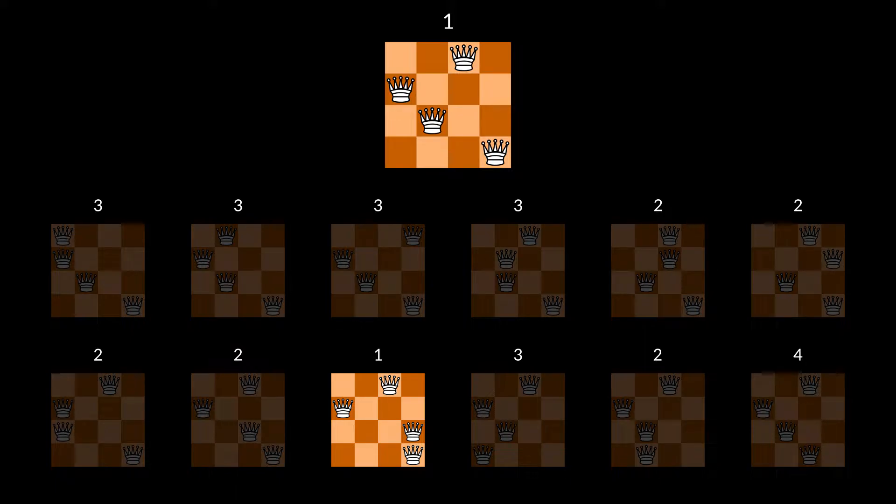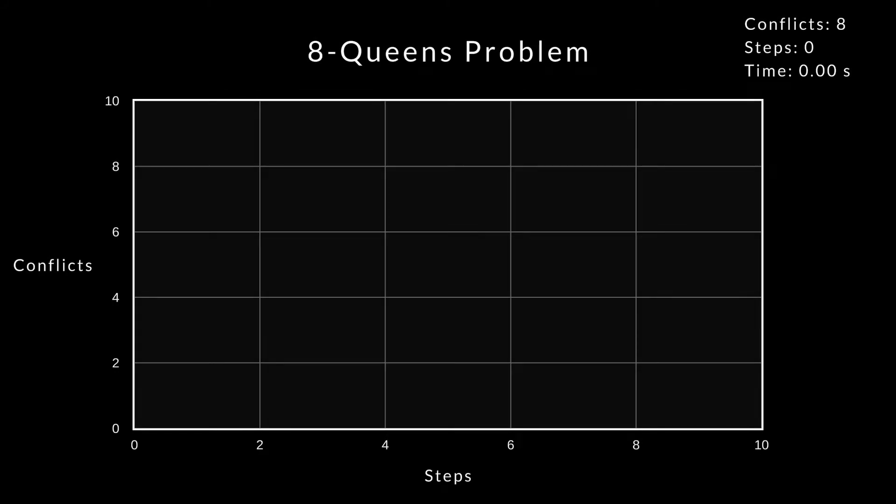Let's see the algorithm in action. We start by solving the 8-queens problem. I have made this program, which tracks the progress of the algorithm. When I start the algorithm in a second, you will see a plot with the conflicts on the y-axis and the steps on the x-axis. You can also see the number of conflicts, the current step, and the time spent here in the upper right corner.